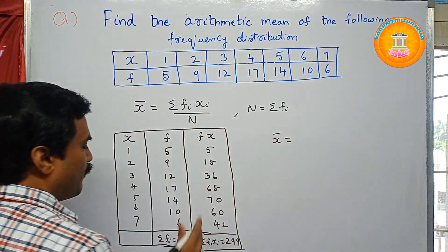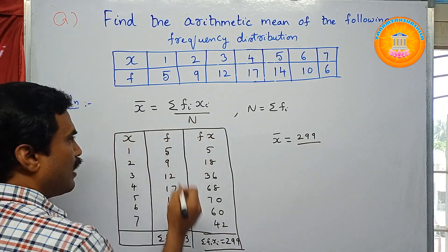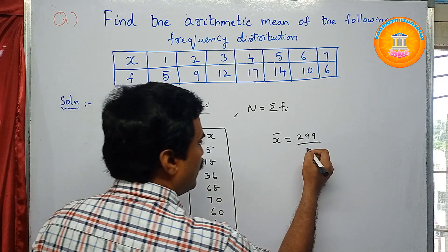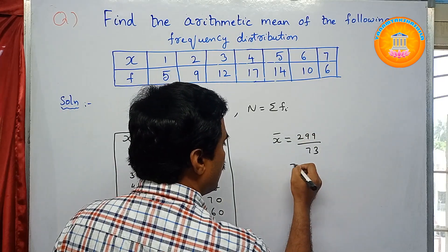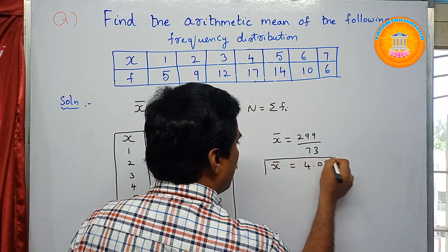Now we solve this X bar. So X bar equals Sigma f_i times x_i, which is 299, divided by n value, which is Sigma f_i, that is 73. So divide this, you will get 4.03.